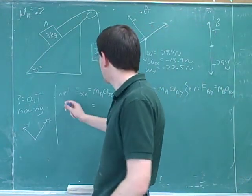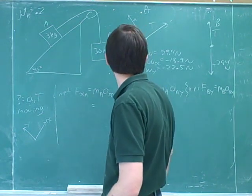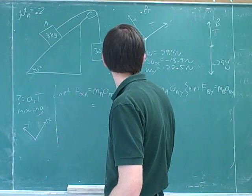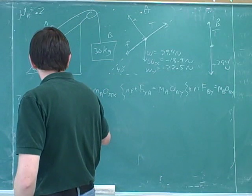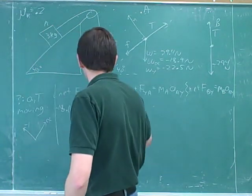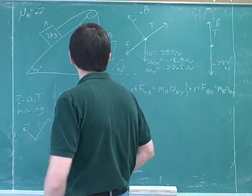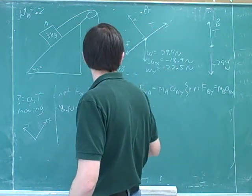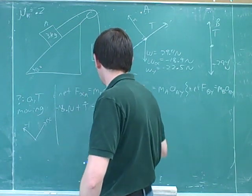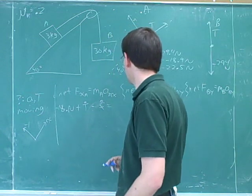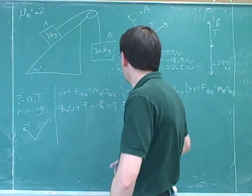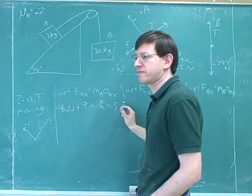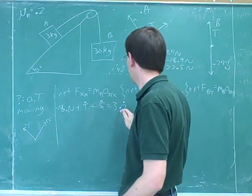Here are our three equations. For net force in the x-direction for A: we have the weight component, which is negative 18.9, plus the tension — which is positive — minus the friction. On the right-hand side we write 3a, with positive acceleration. These two objects will have the same magnitude of acceleration, so we use a positive a here.